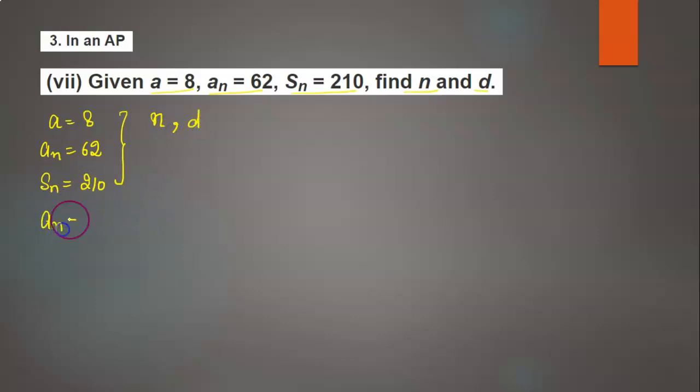First, the formula for the nth term is an = a + (n-1)d. Since an is given as 62, we have 62 equals the first term 8 plus (n-1)d.